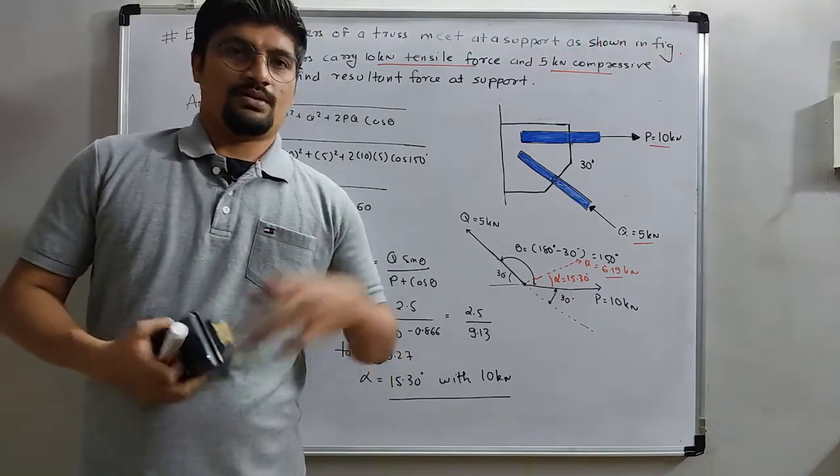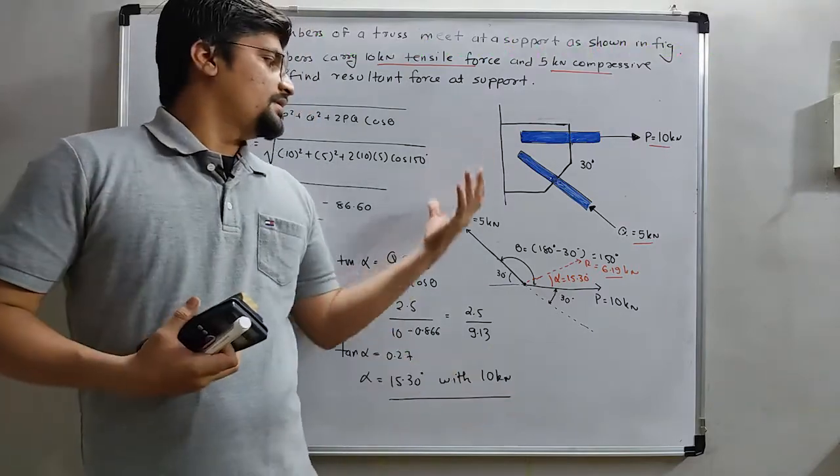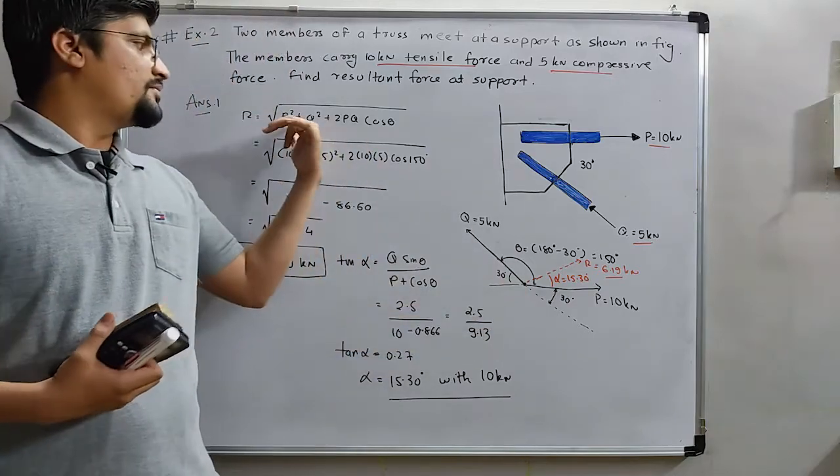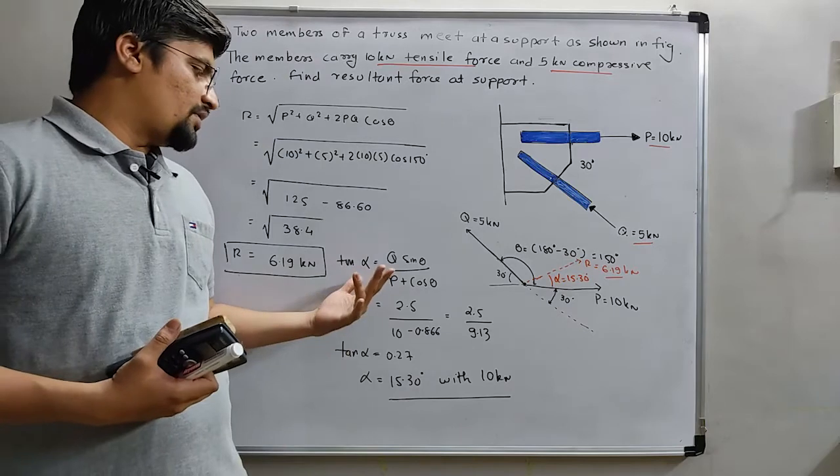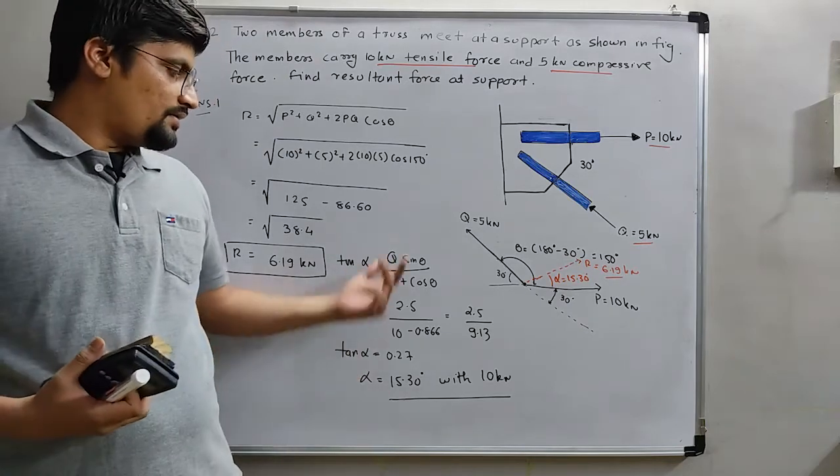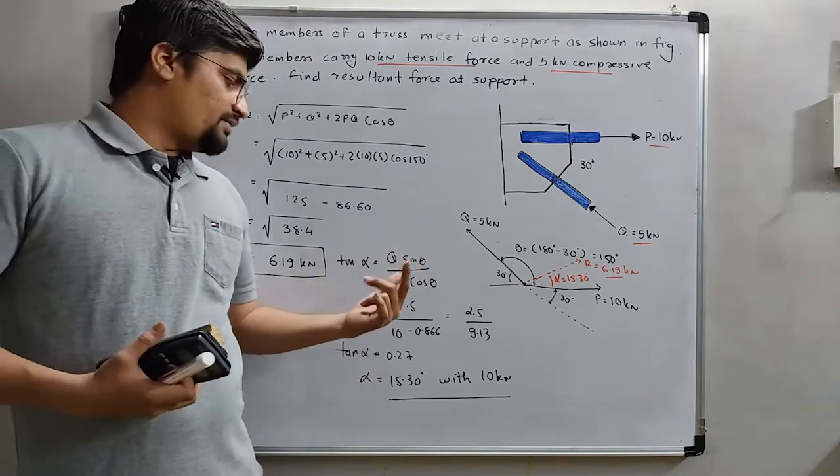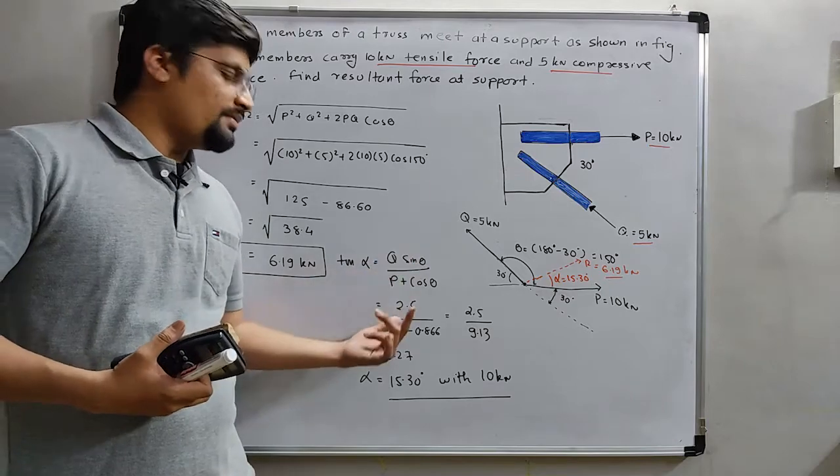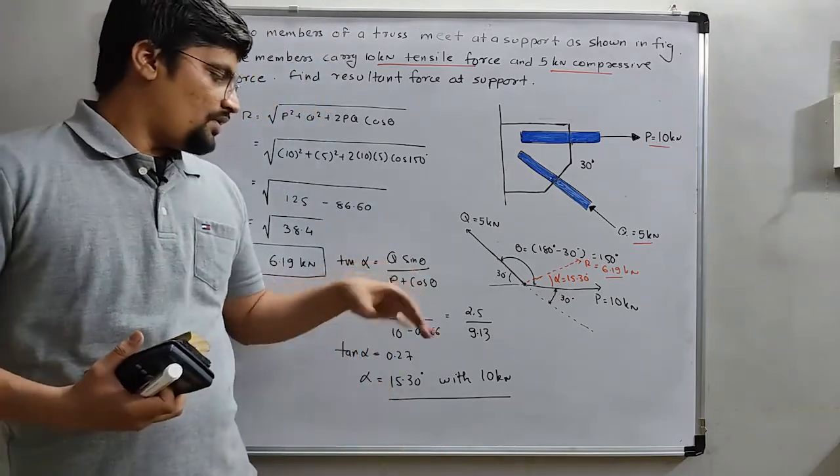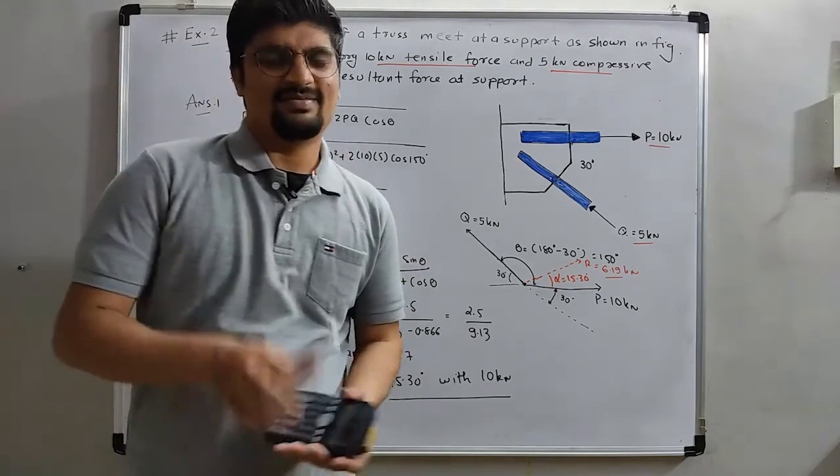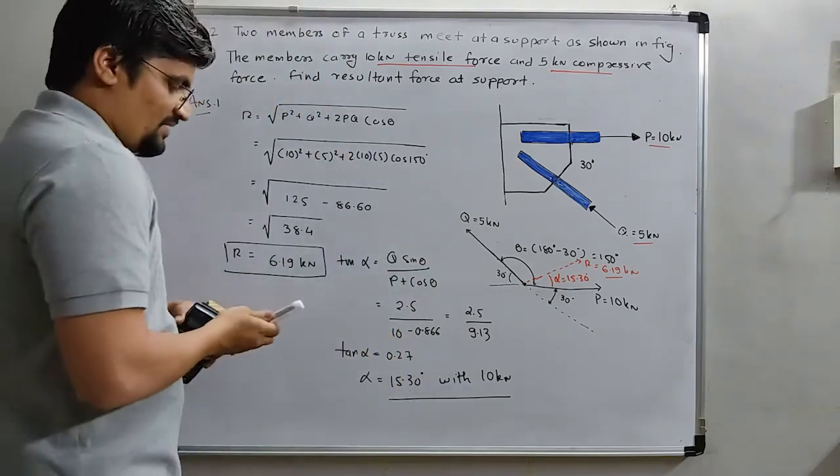Our law of parallelogram is R is equal to P square plus Q square plus 2PQ cos theta, and the location of the R is alpha which is calculated by this formula tan alpha is equal to Q sine theta per P plus Q cos theta. Oh my god, I am sorry, little bit mistake here, I missed the portion Q.